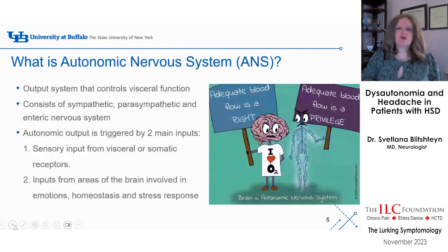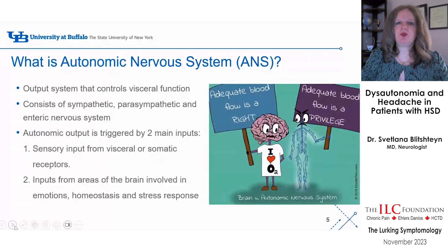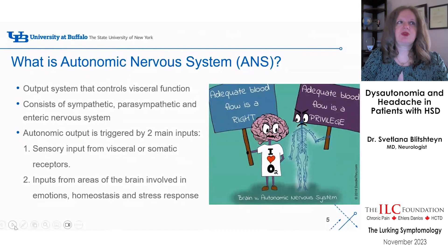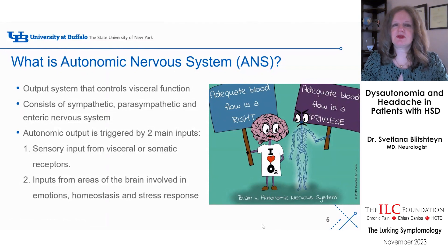The autonomic nervous system is an output system — it controls everything in our body, all of our functions and organs. It consists of the sympathetic, parasympathetic, and enteric nervous systems. It's triggered by two inputs: sensory input from visceral or somatic receptors, and inputs from the brain, which processes all of your emotions, stress responses, and homeostasis. This cartoon illustrates the interplay between the brain and the autonomic nervous system, and the ANS is responsible for oxygenation of the brain through blood flow.